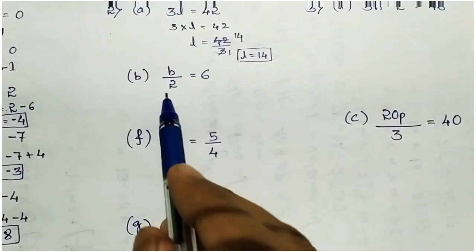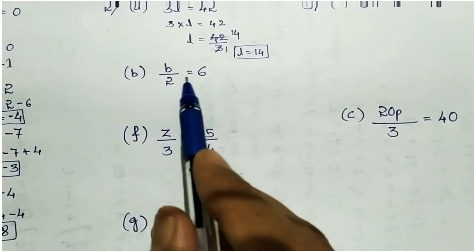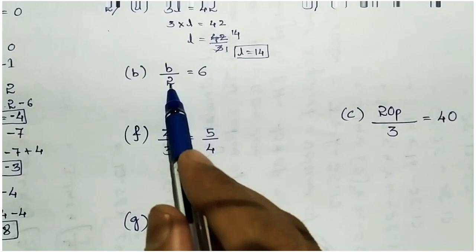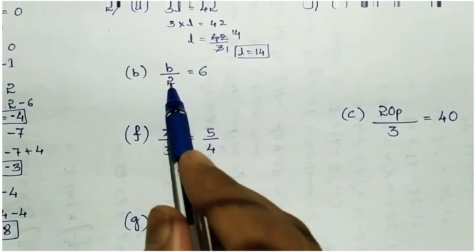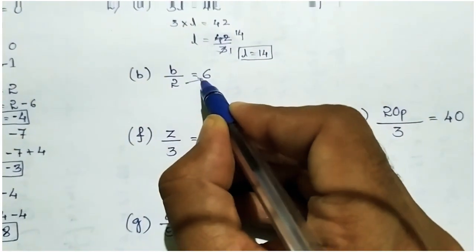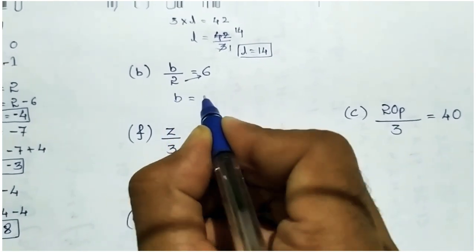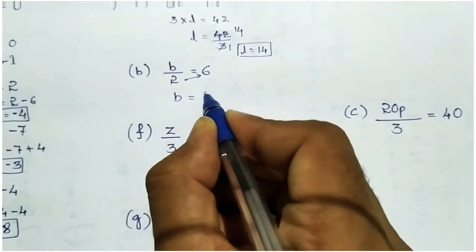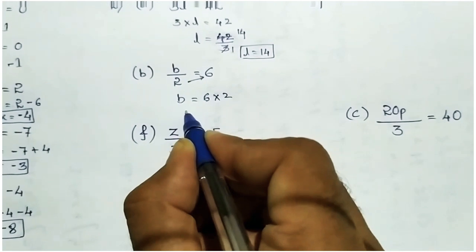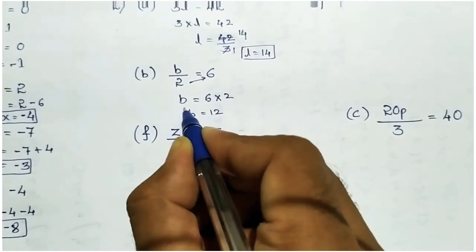Second b: b by 2 equal to 6. Here 2 is dividing. If you take it to the right side it becomes multiplication, so b equal to 6 into 2. 6 twos are 12, so b equal to 12.